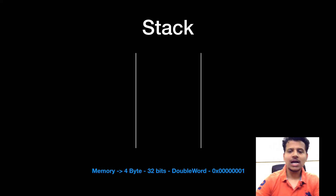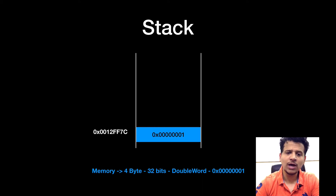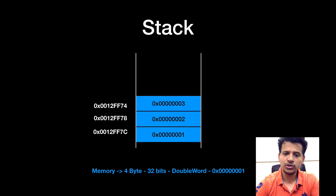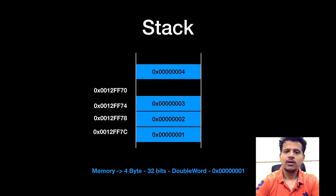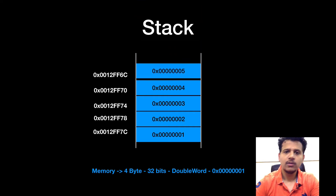So this is our stack. Let's add some elements into it. First we have added 00000001 at memory location 0012FF7C. We have added 00000002 at memory location 0012FF78. Now we have added 00000003 at memory location 0012FF74. Now we have added 00000004 at memory address 0012FF70. And now we have added 00000005 at memory address 0012FF6C.